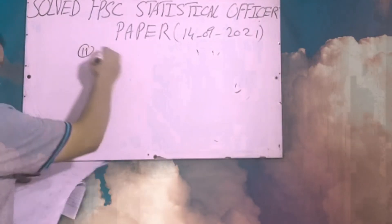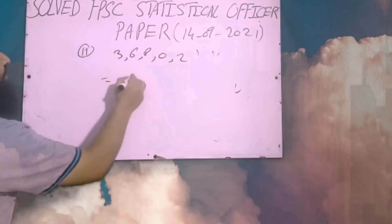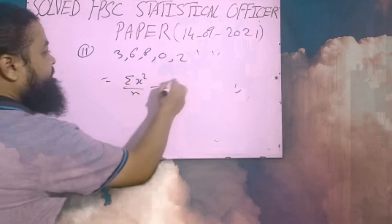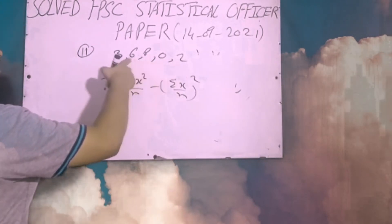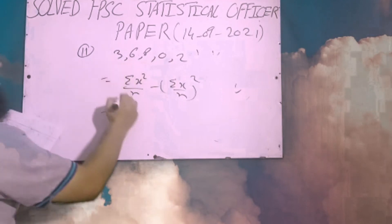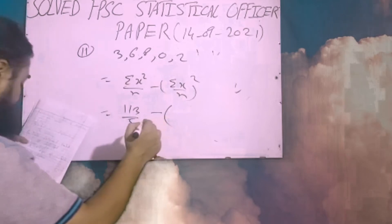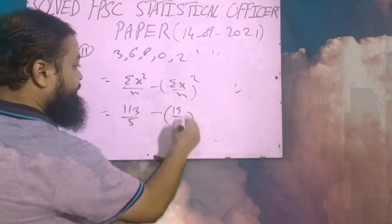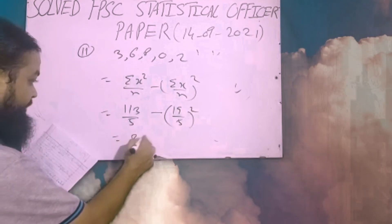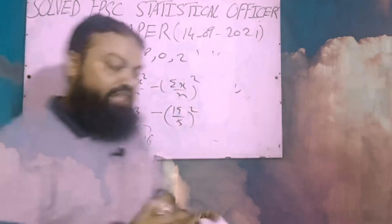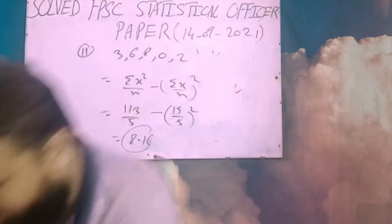Question number eleven: find the variance of the data set 3, 6, 8, 0, and 2. Using the formula: (Σx²/n) − (Σx/n)², that gives (4 + 64 + 36 + 9) = 113, over 5 values, minus (19/5)². The answer is 8.16, which is the correct option in the exam.